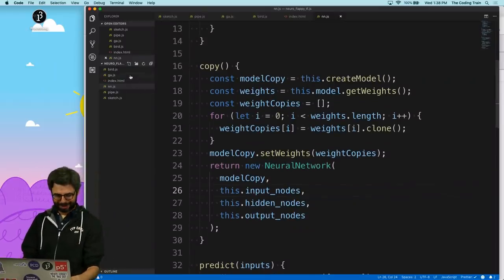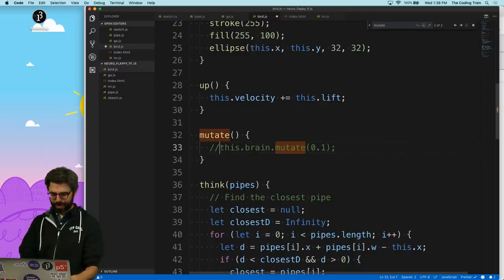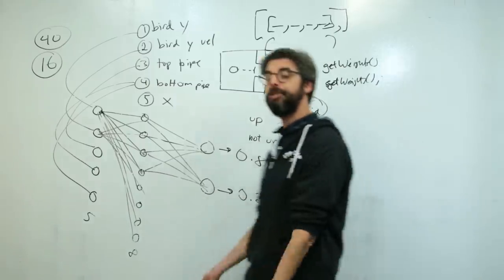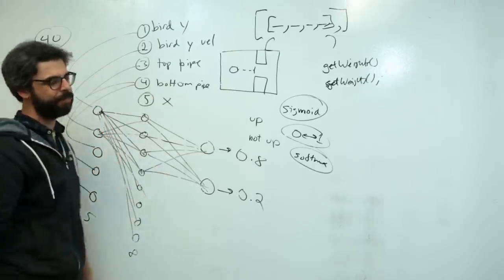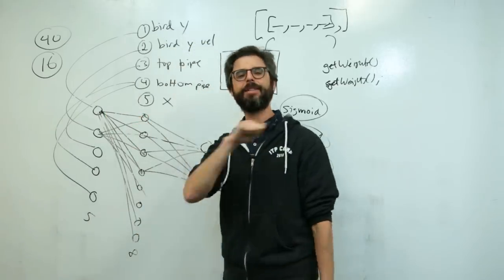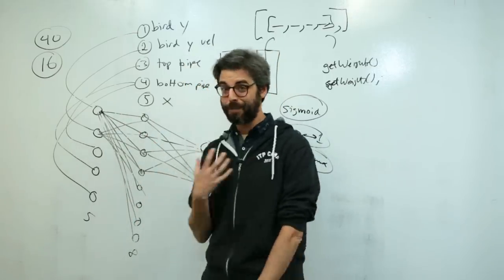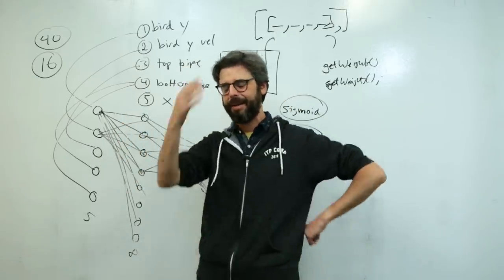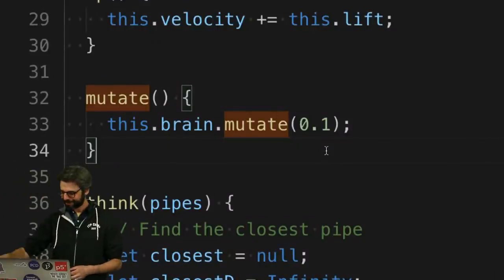Now I need the mutate function. It's getting an argument of 0.1, which is presumably the mutation rate. The process of mutation in a genetic algorithm is to look at all the weights and biases, and at some probability, adjust them — make them random, change them, mutate them. It's more involved than copying: I need to look at every single weight individually and mutate it 10% of the time.